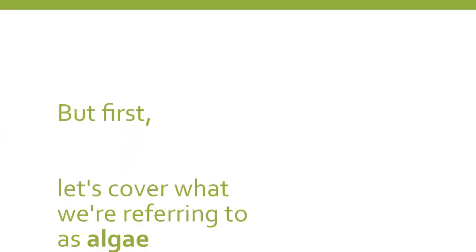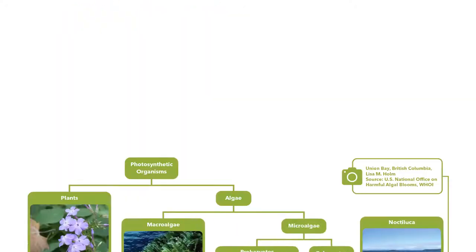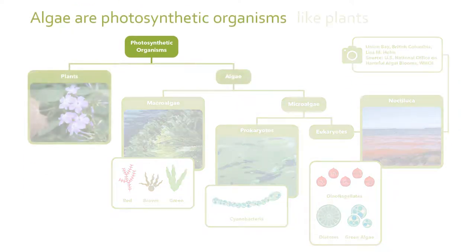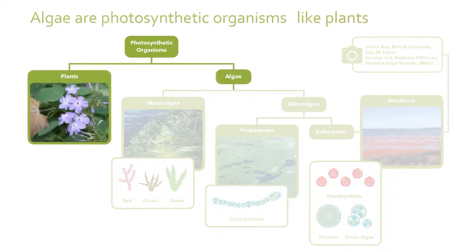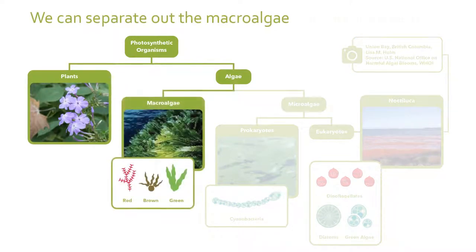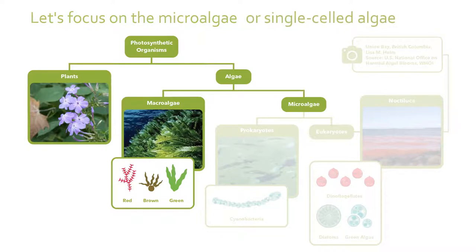But first, let's cover what we're referring to as algae. In simple terms, algae are photosynthetic organisms, like plants. We can separate out the macroalgae, such as the red, brown, and green algae, sometimes referred to as seaweeds. Let's instead focus on the microalgae, or single-celled algae.